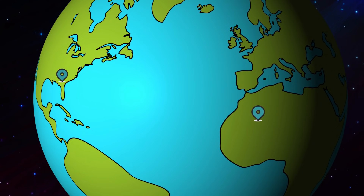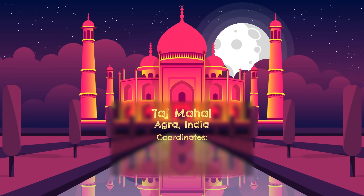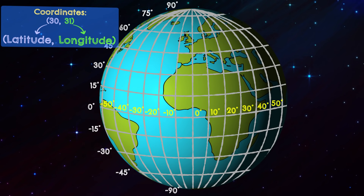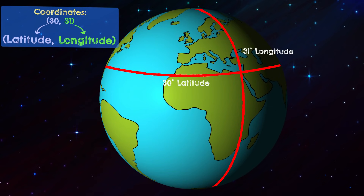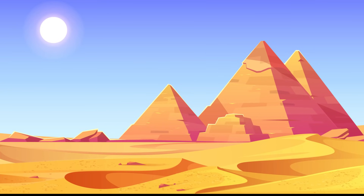Now let's use longitudes and latitudes to locate places on a map. The latitude and longitude position of any place on earth is called its coordinates, with the latitude shown first and the longitude shown second. So if you look for a mystery place with coordinates of 30 and 31, you would find the latitude at 30 degrees and the longitude at 31 degrees, and where these two lines meet is our mystery place — the Great Pyramid of Giza.